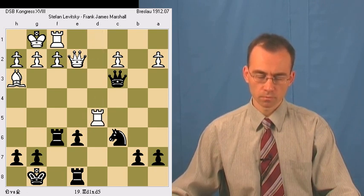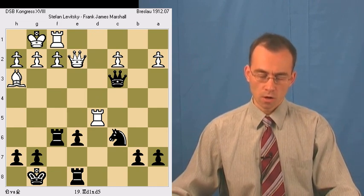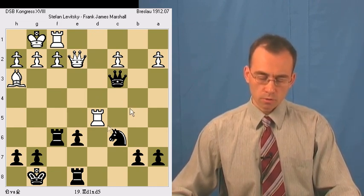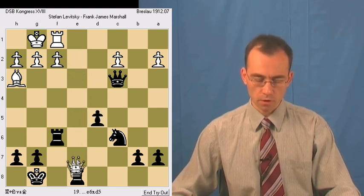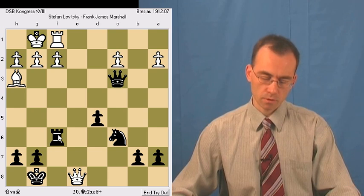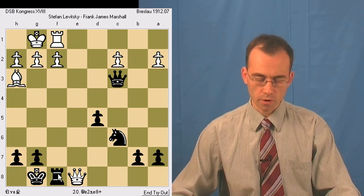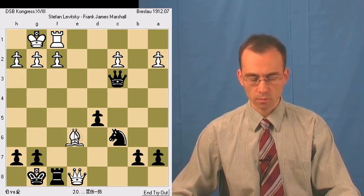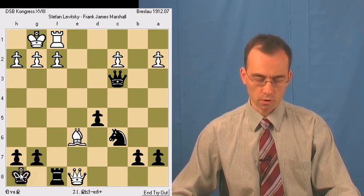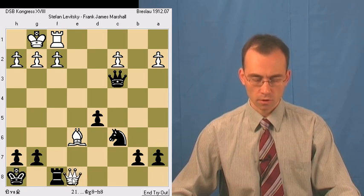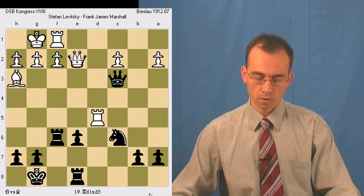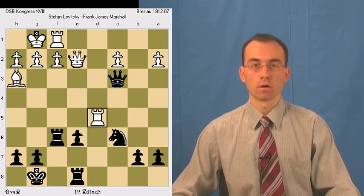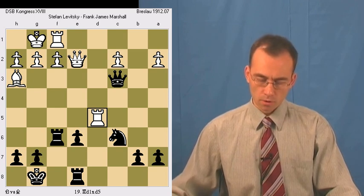And here white plays rook takes on d5, takes pawn on d5. So white cannot take the rook because queen e8 check. The only move is rook f8, then bishop check, king h8 and queen f8 mate. So this rook is untouchable.